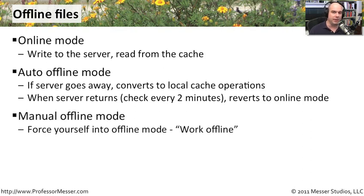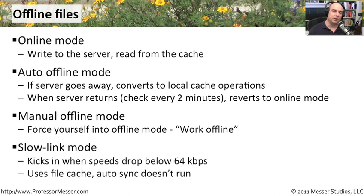There's another method called manual offline mode — you can click a button to go offline, and it won't check every two minutes to see if you can go back online. You'll stay offline until you decide to go back online again. The last mode is called slow link mode. We set a parameter, by default at 64 kilobits per second, and if the speed of the link to the server drops below that number, we will automatically start using the local cached version of the file rather than the one on the server. We don't automatically synchronize, because we're going too slow over the network. So as long as we're below 64 kilobits per second, almost everything will be done locally, even though we can technically see the server.